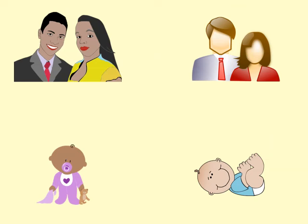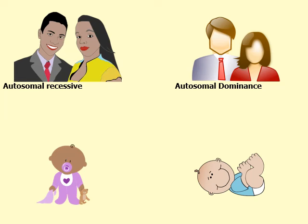Let's compare and contrast two different families. The family on the left will be used as an example of a family experiencing an autosomal recessive disorder, and the family on the right will be experiencing an autosomal dominant disorder. One of the most basic rules of an autosomal recessive disorder is that sufferers must inherit two alleles in order to have the disorder — one allele from the dad and one from the mom.